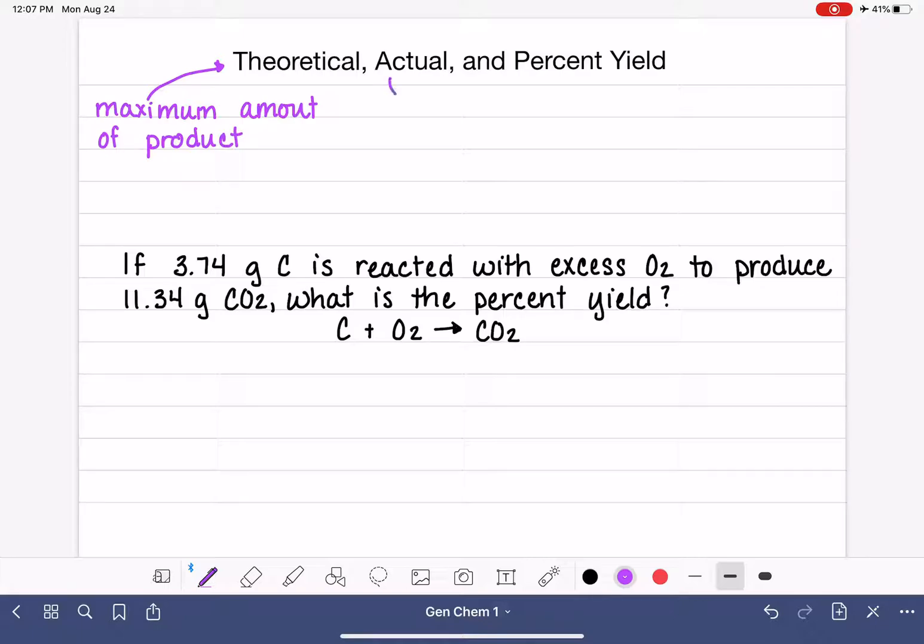The actual yield is the amount of product that is actually made, and the percent yield is just a comparison of the two. It's calculated by taking the actual yield, dividing that by the theoretical yield, and multiplying by 100 to make it a percent.